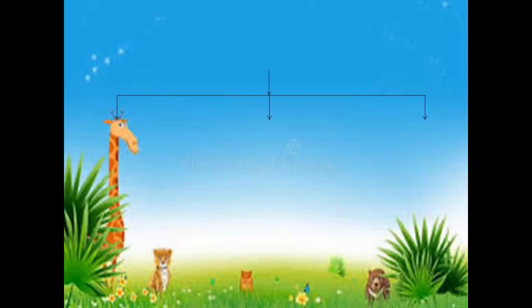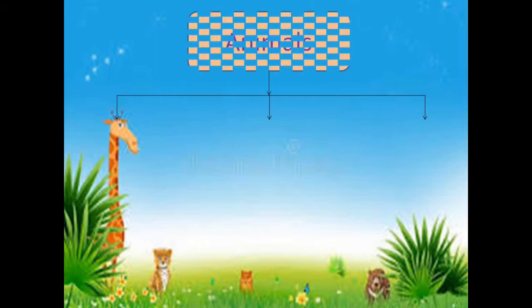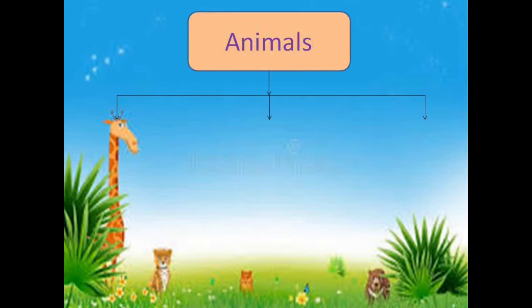Let's see what this flowchart is going to show us. Animals can be divided into three basic categories according to their eating habits.